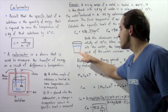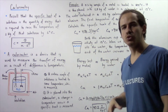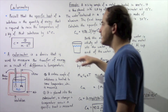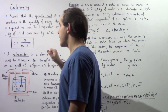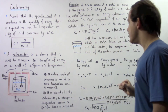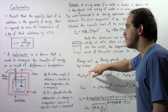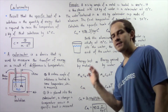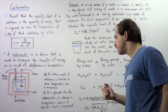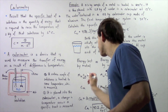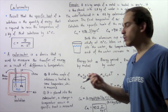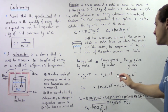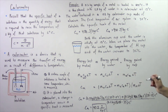This implies that the energy lost by the metal equals the energy gained by the water plus the energy gained by the cup. Rearranging and solving for Q, the energy lost by the metal equals the product of the mass of the metal, the specific heat of the metal (what we're looking for), and the change in temperature of the metal. This equals MW × CW × ΔT plus MA × CA × ΔT.